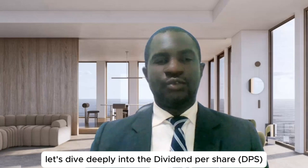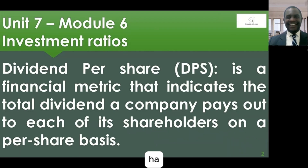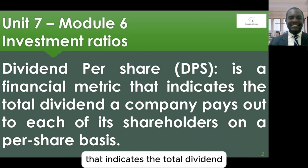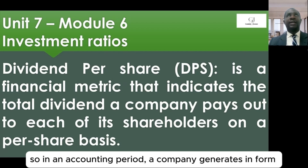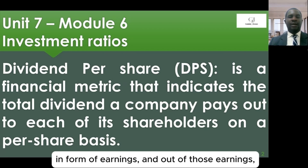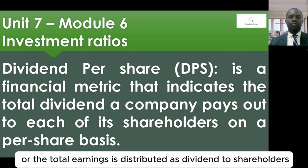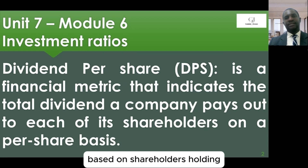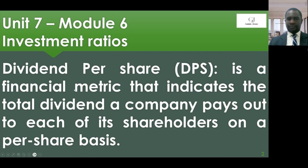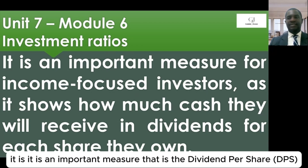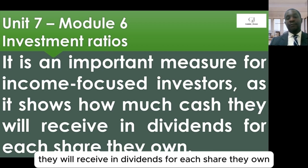Let's dive deeper into Dividends Per Share. The dividend per share is a financial metric that indicates the total dividend a company pays out to each of its shareholders on a per share basis. In an accounting period, the company generates income in the form of earnings, and part of those earnings — or the total earnings — is distributed as dividend to shareholders based on their holdings per unit of shares. It is an important measure for income-focused investors, showing how much cash they will receive in dividends for each share they own.